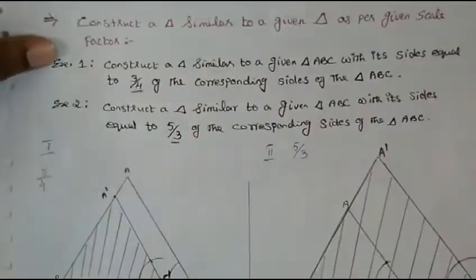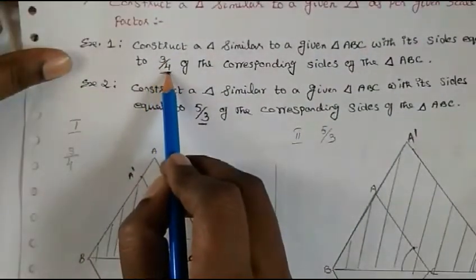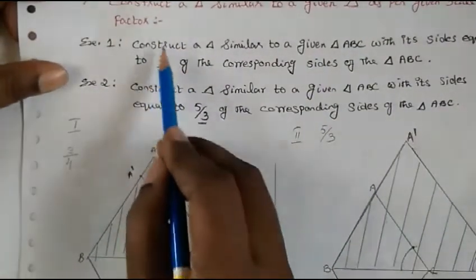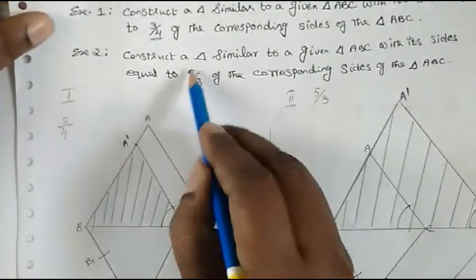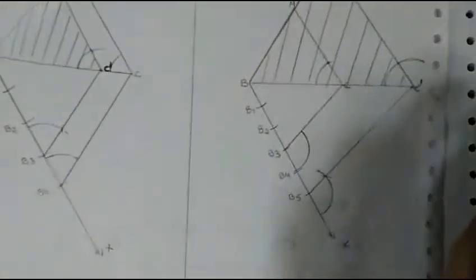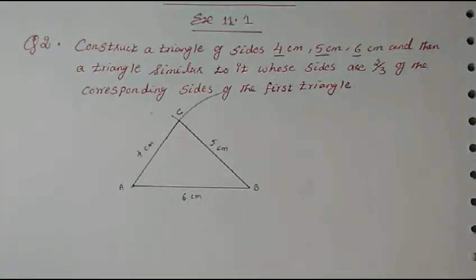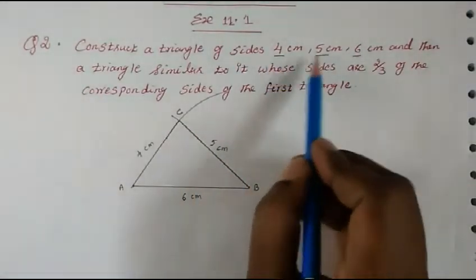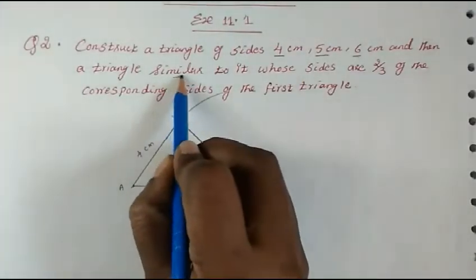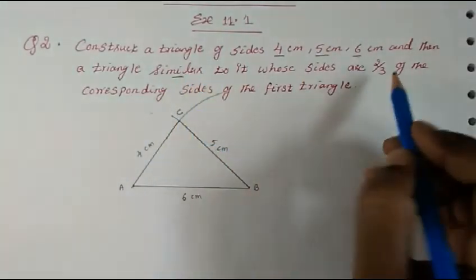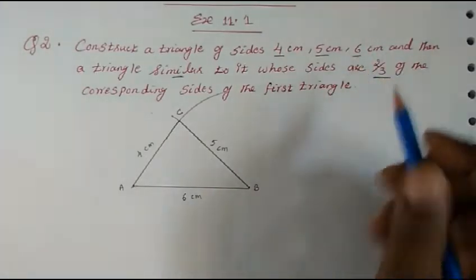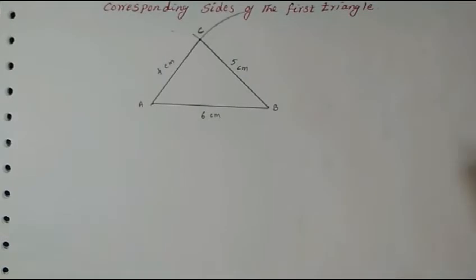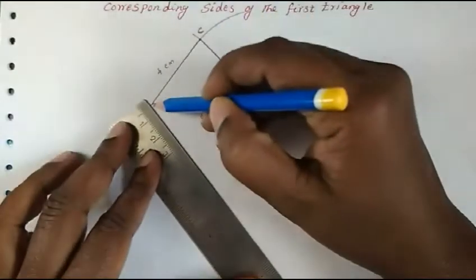But if you have to draw a similar triangle, what we do is look at the biggest number. If the biggest number is 4, we make 4 parts; if the biggest number is 5, we make 5 parts. Please go through the introduction — it will be easy to understand. Here, we have to construct a similar triangle of ratio 2/3, so the biggest number is 3. We need to make 3 parts. Let's draw an acute angle.